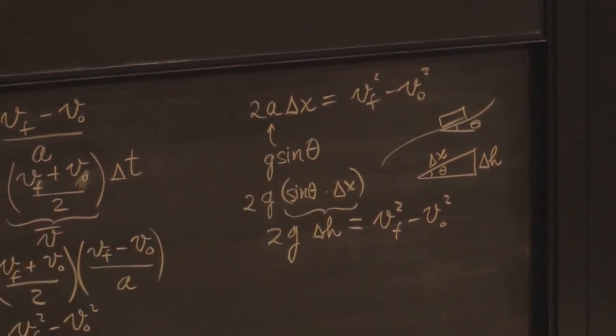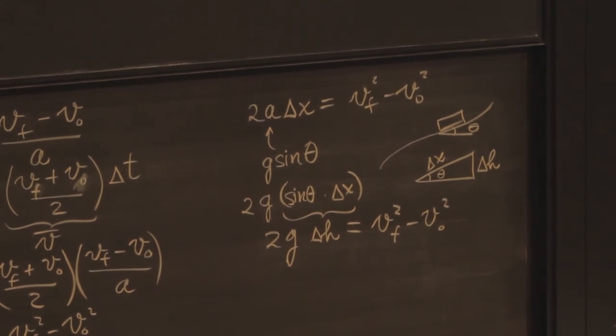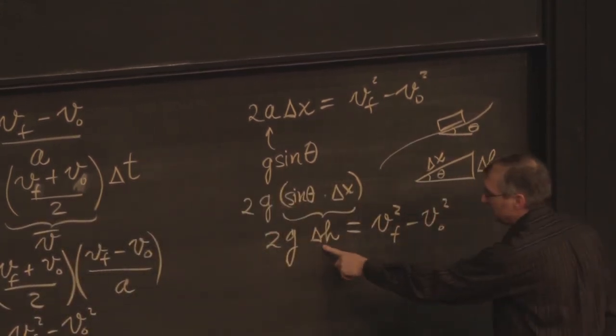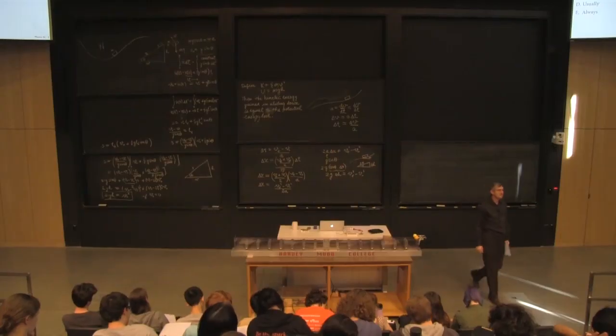So that is the demonstration that it's general. As long as I chopped up with infinitesimal little bits, the little change in height produces a little change in v squared.